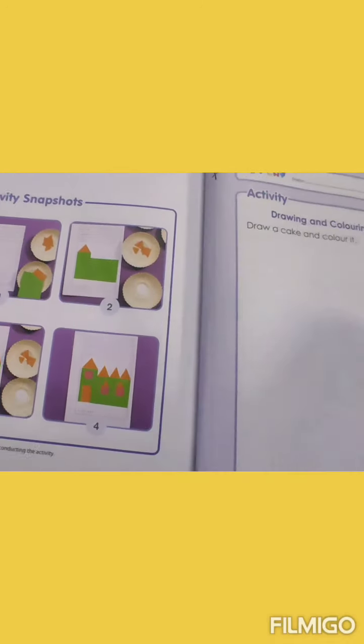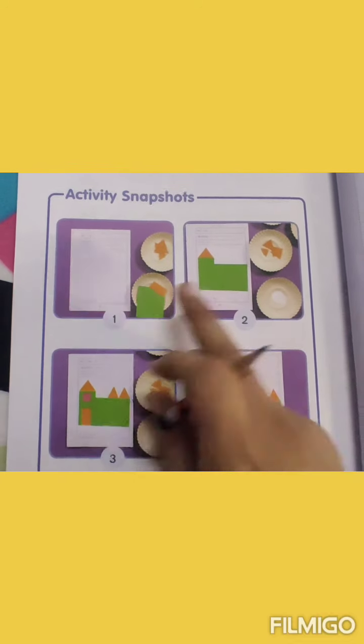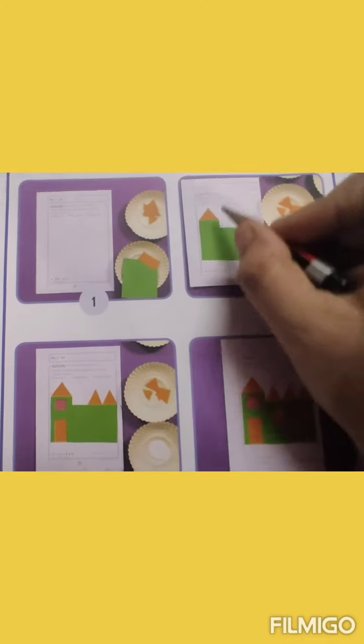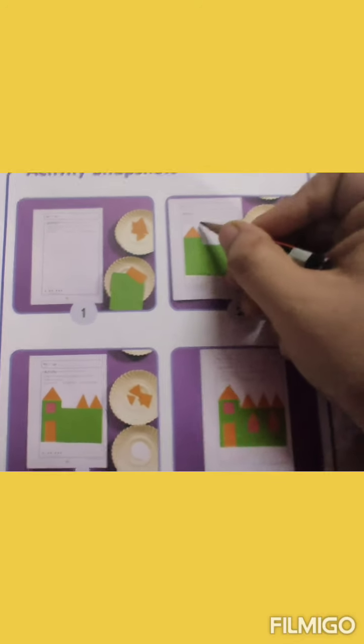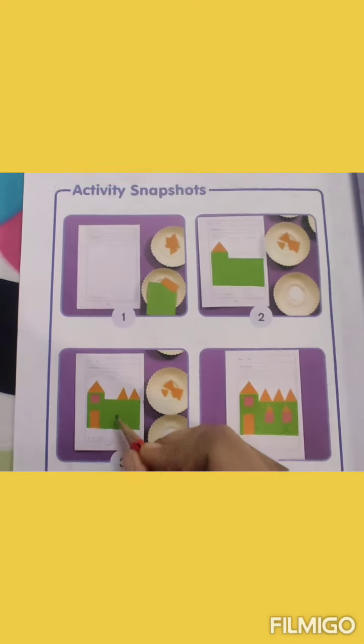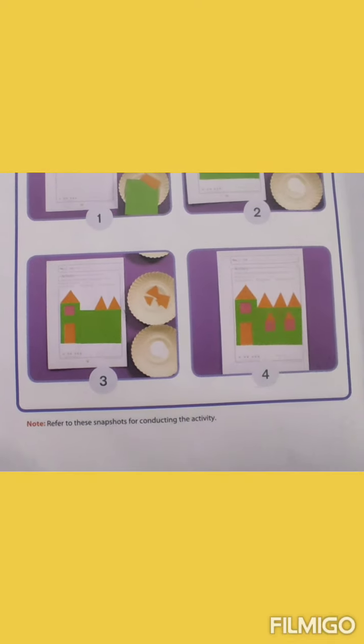Alright, so let's see the snapshots which is referred at the back side of this page. Yes, these are the activity snapshots that show how you have to do the activity. The first step you can see here in one plate we have taken the shapes of different colored papers, scrap sheets and then you can see we have pasted the shapes like square, rectangle and triangle and in this way we have completed in third step also and in fourth step we have completed the full picture like this. So we will refer to these steps and then we will do our activity.